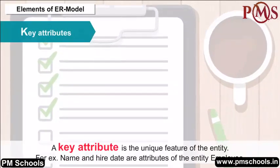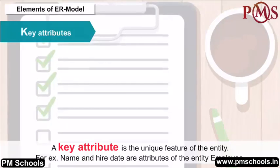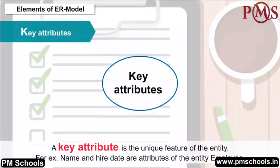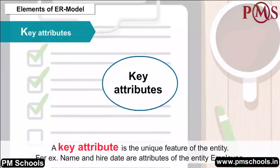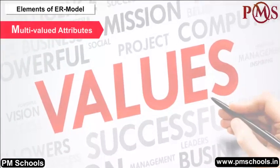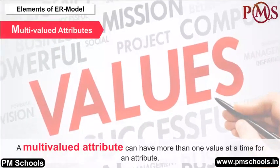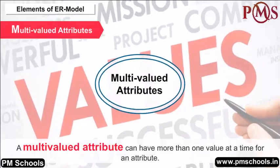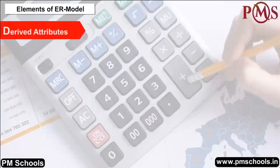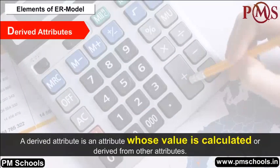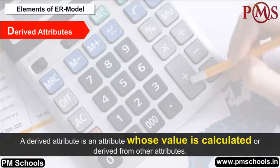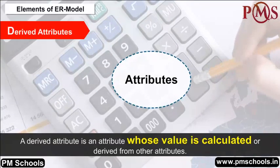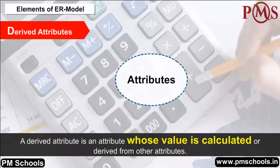Key Attributes: A key attribute is the unique feature of an entity. For example, name and hire date are attributes of the entity employee, shown in ovals attached to their entity with straight lines. Multivalued Attributes: A multivalued attribute can have more than one value at a time and is shown in double ovals. Derived Attributes: A derived attribute is one whose value is calculated or derived from other attributes, represented by dashed line ovals.